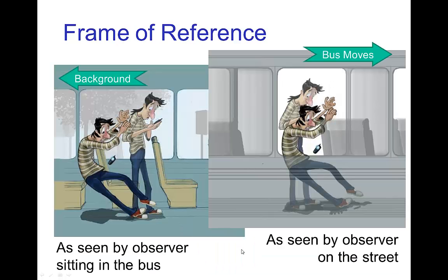You have to realize that it only seems as if you are thrown backwards because if you are an observer moving with the bus — say someone sitting in the bus watching you standing in the aisle — that person will be moving forward with the bus, and from their point of view it seems as if you are moving backwards. On the other hand, if there's someone standing outside the bus on the street looking in the window, they actually see you staying in place as the bus moves out from under you.